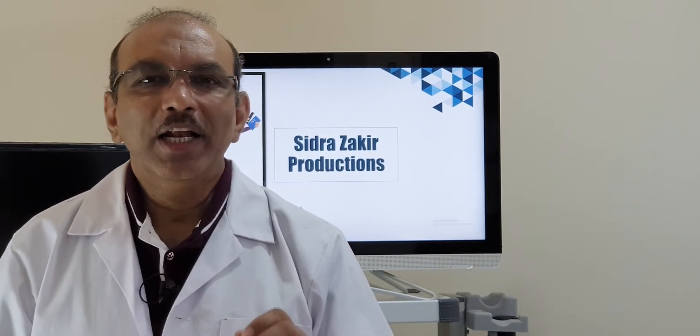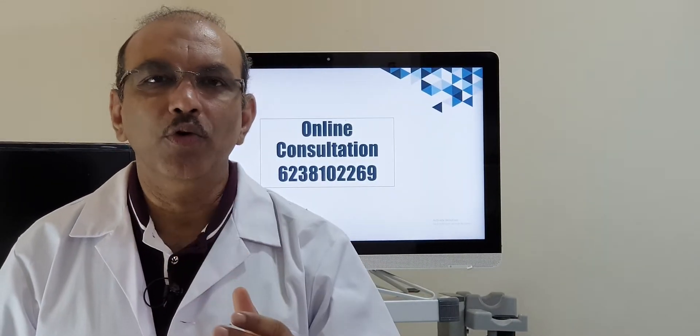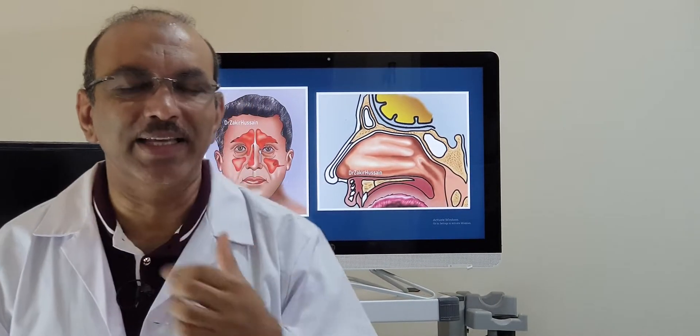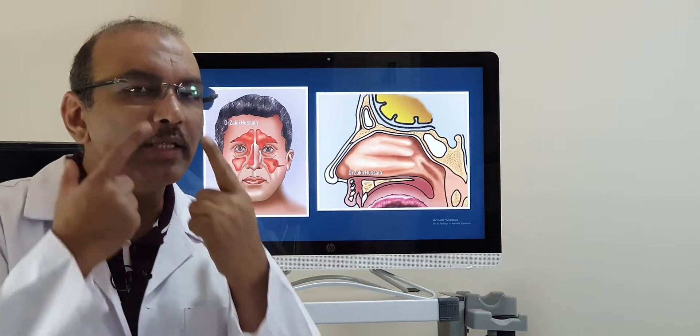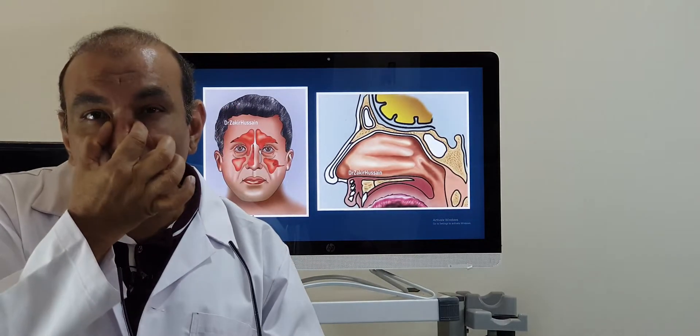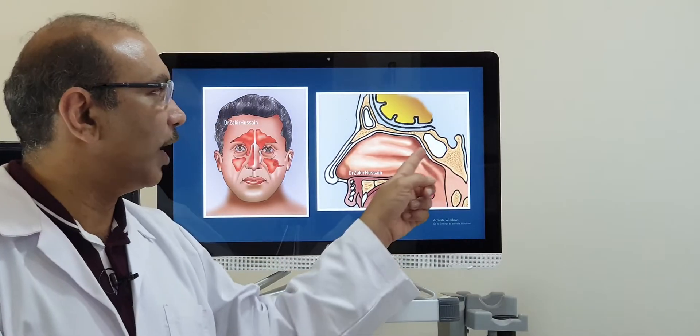Let me first tell you the structure of the sinuses. Inside the skull bone, we all have four sets of sinuses. This one here is a frontal sinus, and here you have the maxillary sinus — you can have a look at the picture also. This is a maxillary sinus, and on either side you have the ethmoid sinus, and way behind the nose you have the sphenoid sinus.